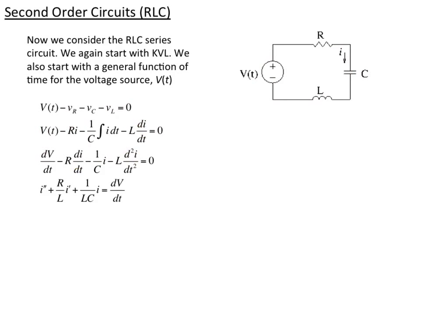Rearranging all those terms and bringing the i terms to the other side, and dividing out by L, we get: i double-prime plus (R/L)·i' plus i/(LC) equals (1/L)·dV/dt. There is a factor of 1/L everywhere.